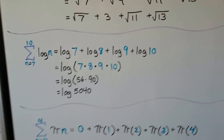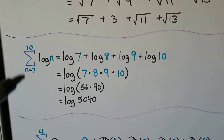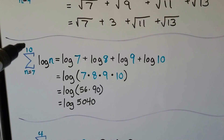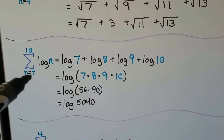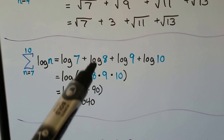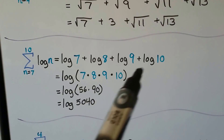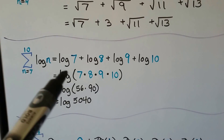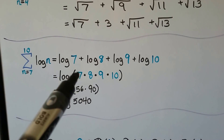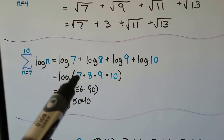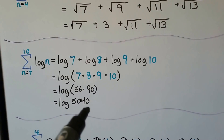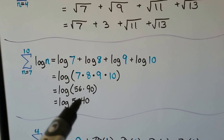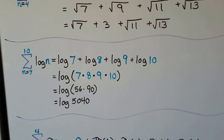We can even do it with logarithms. Our general term is log n, and we're going to have 10 terms starting at 7. So we have log 7 plus log 8 plus log 9 plus log 10. That means we do log of 7 times 8 times 9 times 10 — that's 56 times 90 — so we get log 5040.